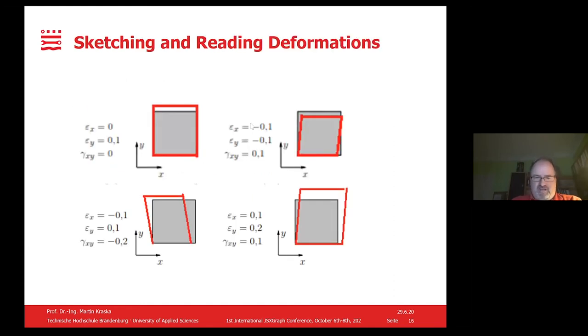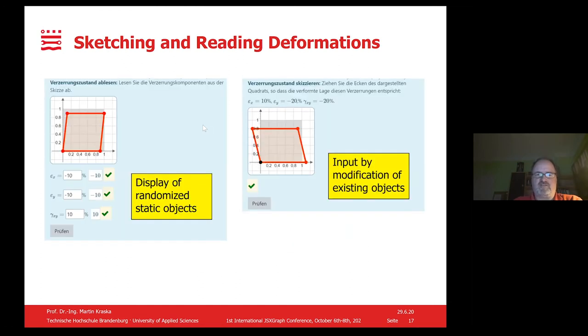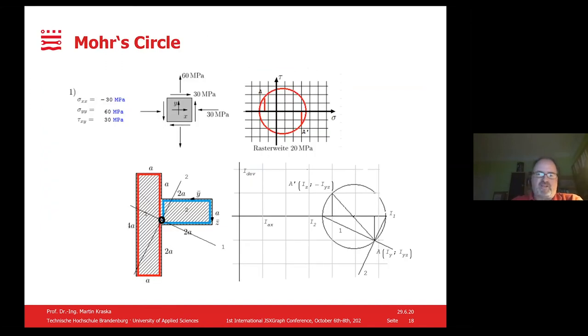I give some examples. For instance, the concept of strain: how do we describe strain by strain components and what shape distortion does that provide? The correlation can be sketched and converted into STACK questions with JSXGraph. One option is you display a distorted shape and ask for the strain components, or you provide the strain components and ask for the distorted shape. That's the easy one because existing objects are just modified, which can be done in the standard way as also in the documentation of STACK.